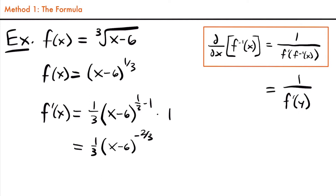So simplifying, this equals one-third times x minus six to the negative two-thirds power. If we move the quantity with the negative exponent to the denominator so that the exponent is positive, we have that this equals one divided by three times x minus six to the two-thirds power, where that two-thirds is positive.